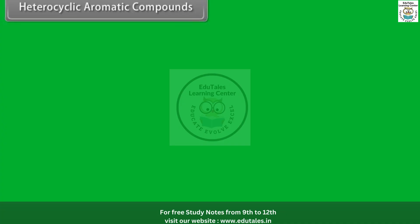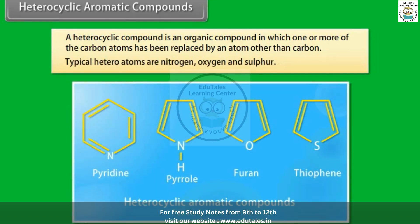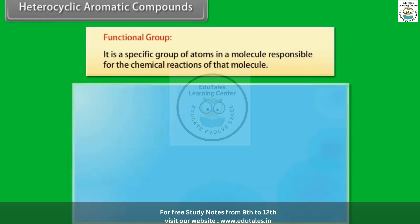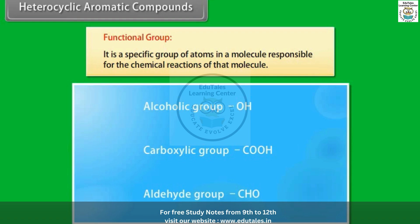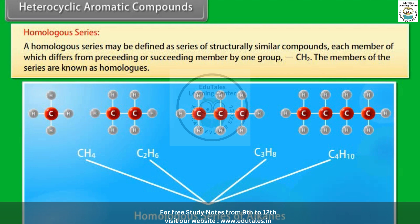Heterocyclic aromatic compounds: A heterocyclic compound is an organic compound in which one or more carbon atoms have been replaced by an atom other than carbon. Typical heteroatoms are nitrogen, oxygen, and sulfur. Functional group: It is a specific group of atoms in a molecule responsible for the chemical reactions of that molecule. Homologous series: A homologous series is a series of structurally similar compounds, each member of which differs from the preceding or succeeding member by one CH2 group. The members of the series are known as homologues.